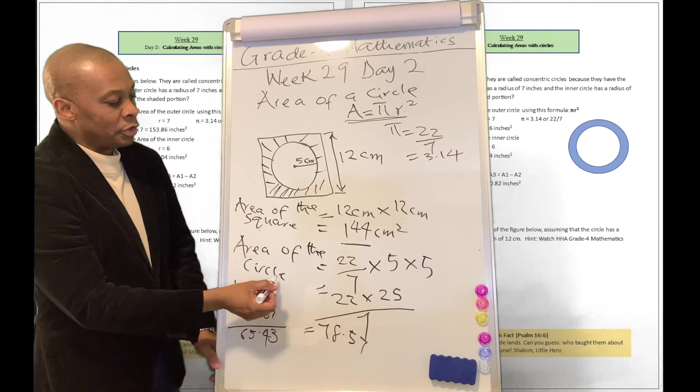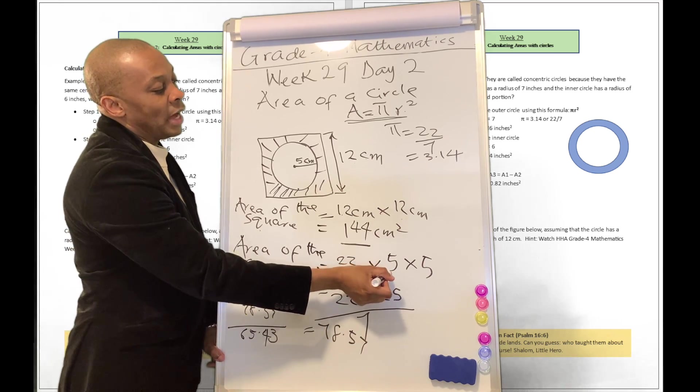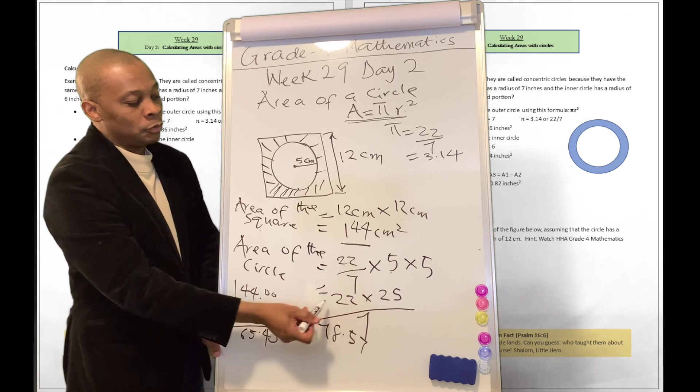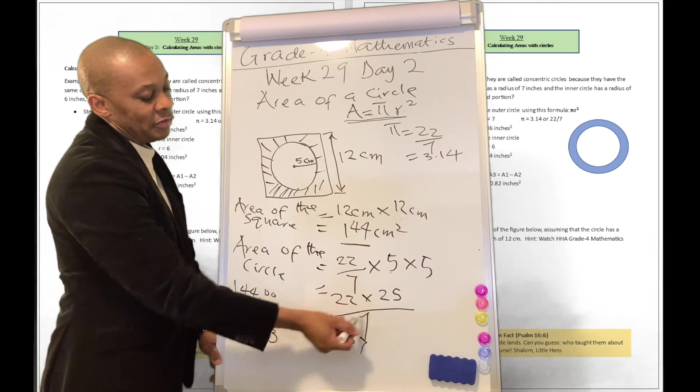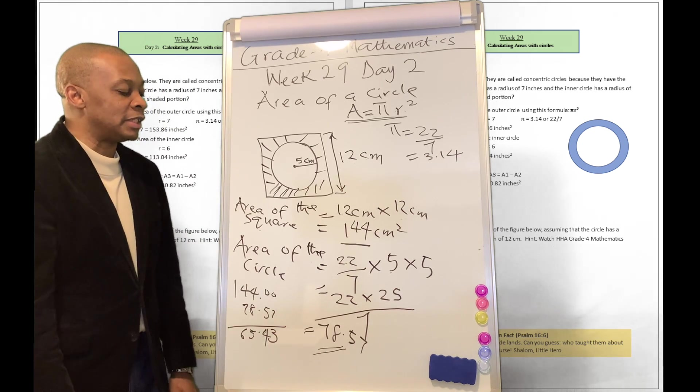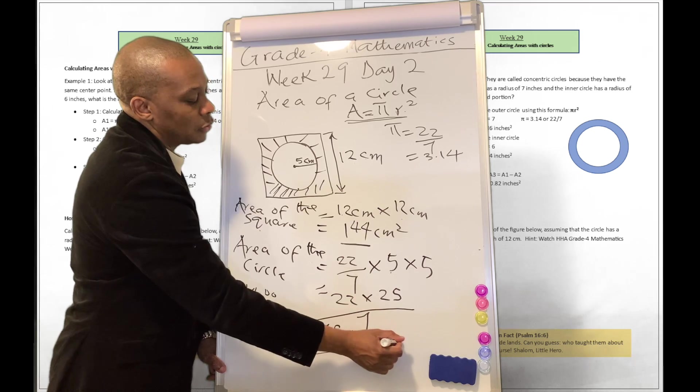So you're going to come over here and try to plug it in here. It's 22 divided by 7, multiplied by 5, multiplied by 5. And that's going to be equivalent to 22, multiplied by 25, divided by 7. And when you use your calculator to do that, you can get 78.57 centimeters squared.